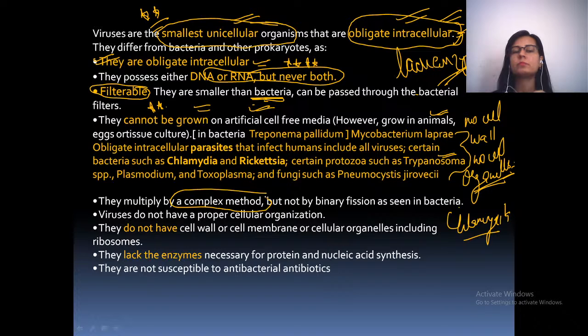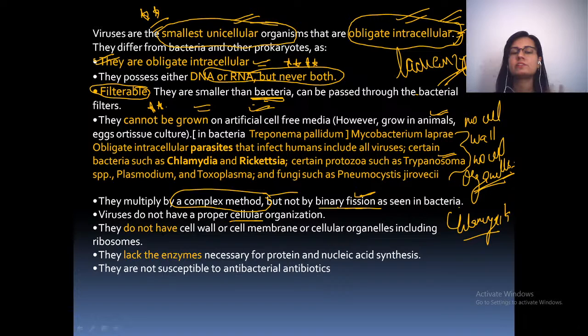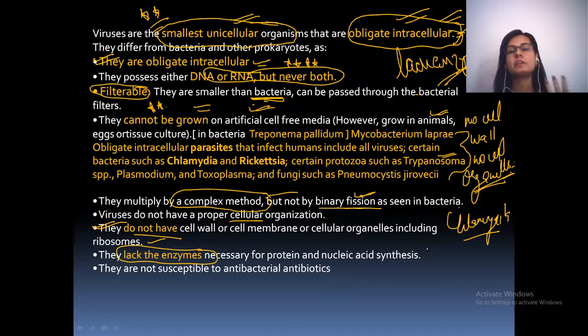Viruses multiply by a complex method — not by simple binary fission as seen in bacteria — because they use the host cell. Viruses do not have proper cellular organization: no cell wall, no cell membrane, no cell organelles including ribosomes. They do not have enzymes necessary for protein and nucleic acid synthesis, which are required for formation of daughter virions. Therefore, they use the host cell and are obligate intracellular.